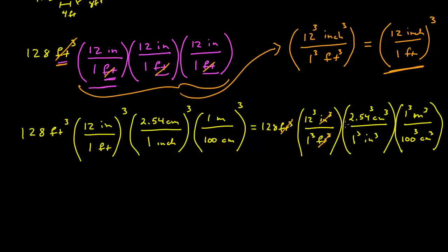And now I can make sure I can cancel everything, the feet cubed cancel, inches cancel, centimeters cancel, and I'm left with meters cubed. Then all I have to do is multiply all the numbers, making sure I cube everything, and I get 3.62 meters cubed.